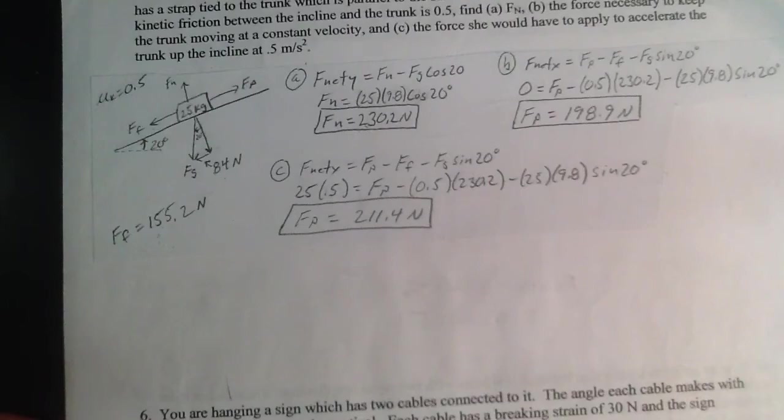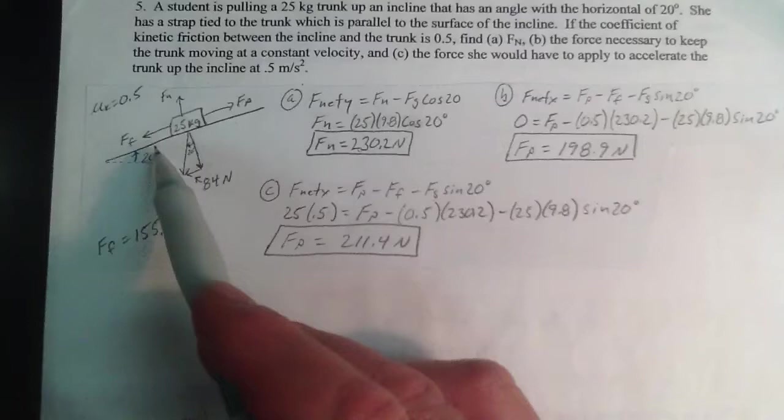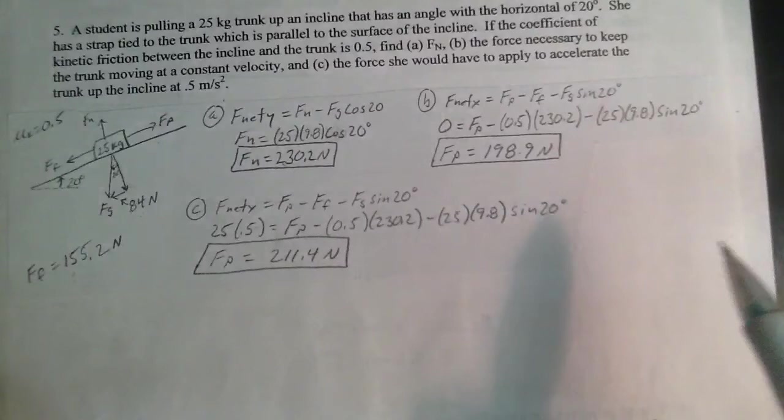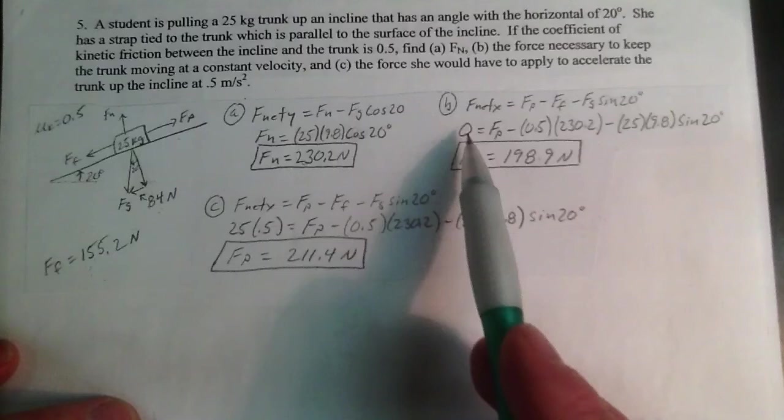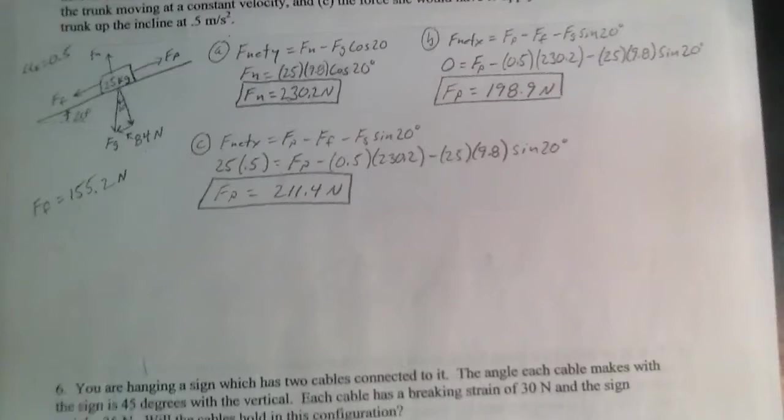And then after that, we've got constant velocity with this applied force. So this vector has to be equal to the addition of two vectors, is what this statement says here. Therefore, I can solve for the force applied. And then they said, what about now, instead of constant velocity, accelerate? This same statement, instead of being equal to zero, it's equal to mass times acceleration.